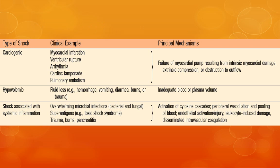This table sums up the three generalized categories of shock, their examples, and the principal mechanisms involved. The principal mechanisms in cardiogenic shock may differ from condition to condition, while in hypovolemic shock the main principal mechanism is almost always depletion of the plasma or blood volume. The mechanism of septic shock will be studied in detail in the coming slides.